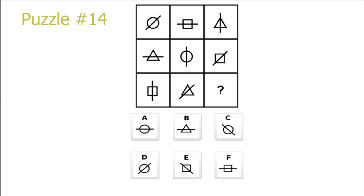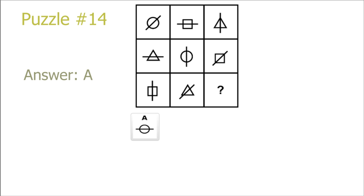Puzzle 14. Here we have the same thing with the top left to the bottom right diagonal, but in this case it's the shapes. So we have a circle, and if we look from the top right to the bottom left diagonal, the diagonals are repeating every 3 diagonals, and we have a horizontal line as our correct solution. So A is the correct answer.